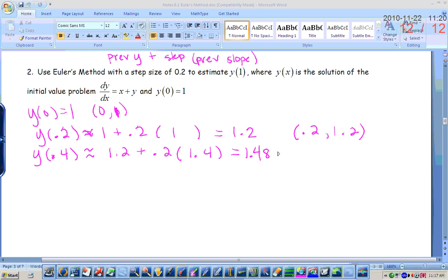Okay. So I can't go straight to estimating y of 1. I have to take each step. Alright, so this new point is 0.4, comma, 1.48.